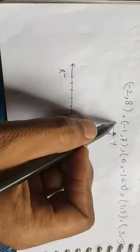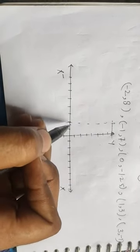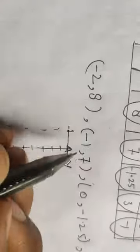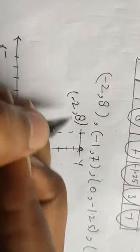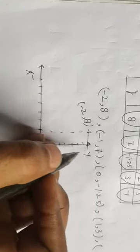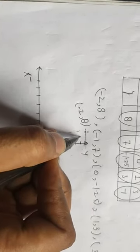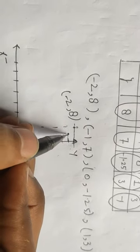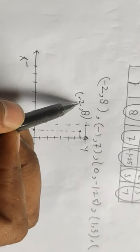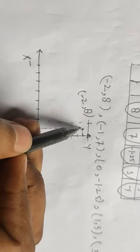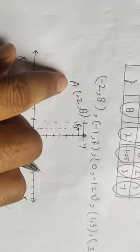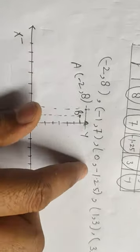On the y-axis, 8 represents this line. Draw a line passing through the given point; the intersecting point represents the required point (-2, 8), which is point A. Similarly, for point B = (-1, 7): -1 is on the x-axis and 7 is on the y-axis. Join the line passing through the given abscissa and ordinate — this point represents your second point B.